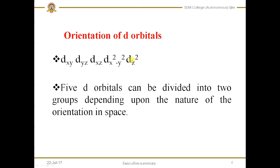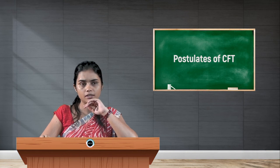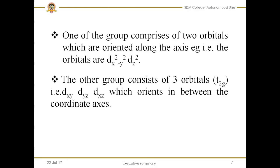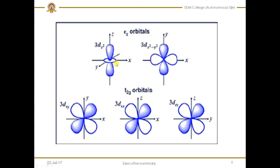The 5 d orbitals can be divided into 2 groups depending on the nature of their orientation in space. One group comprises 2 orbitals which are oriented along the axes, referred to as eg. These orbitals are dx²-y² and dz². As you can see, dz² is oriented along the z axis and dx²-y² is oriented along the x and y axes.